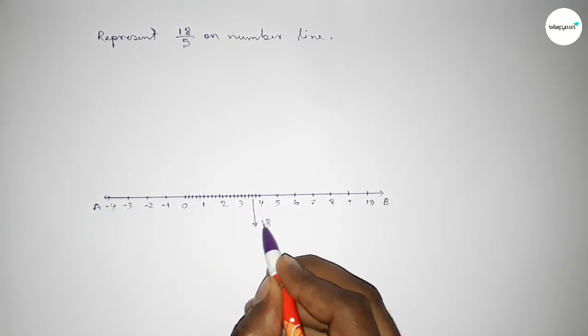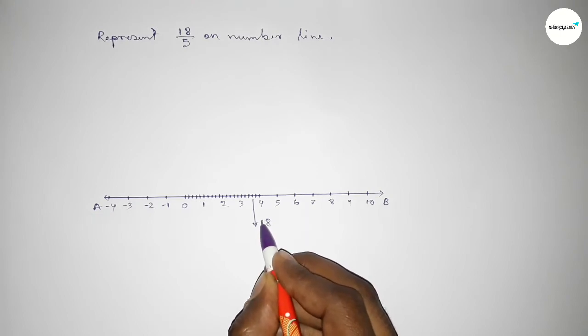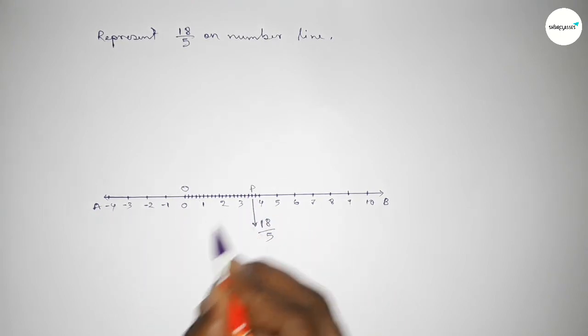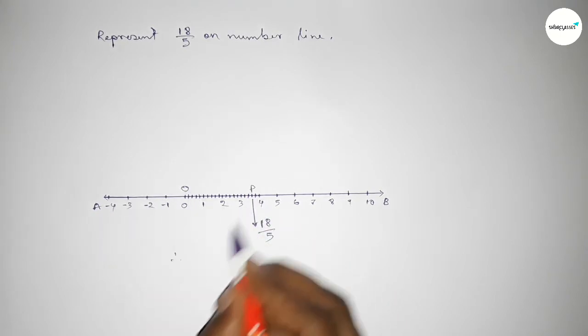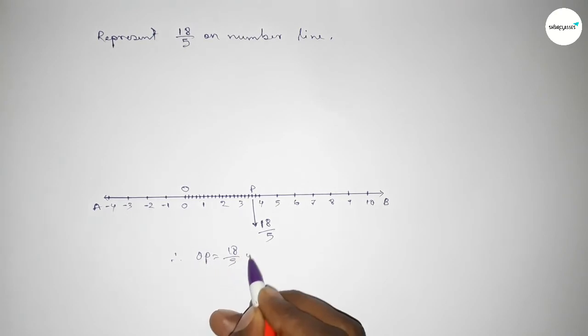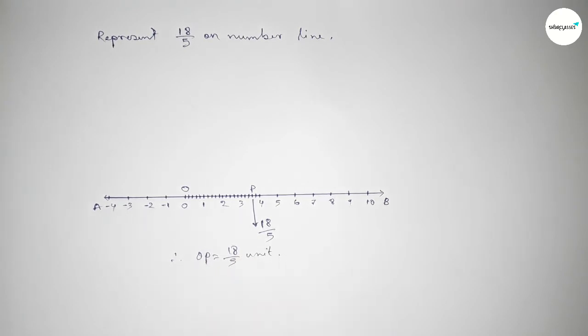So this is 18 over 5 on the number line. Taking O and P, therefore OP equals 18 over 5 units. That's all. Thanks for watching. If this video is helpful to you, then please like and share.